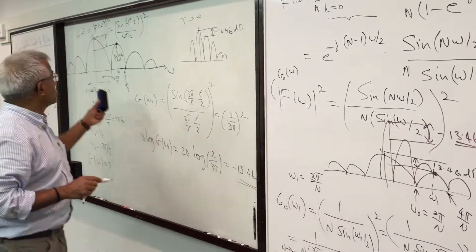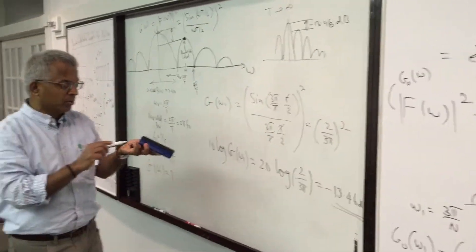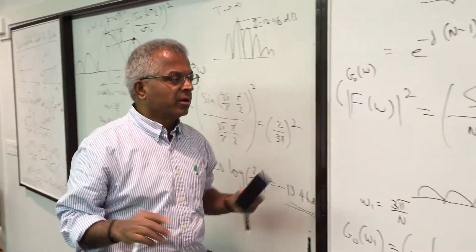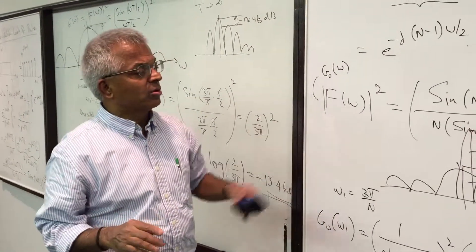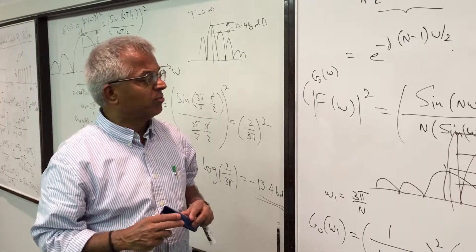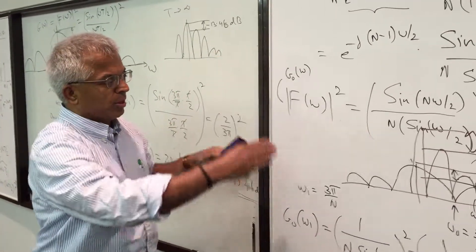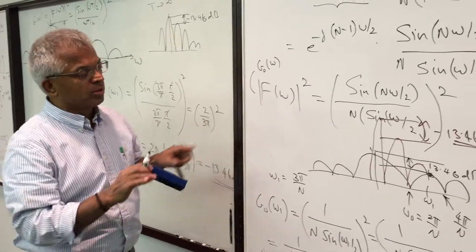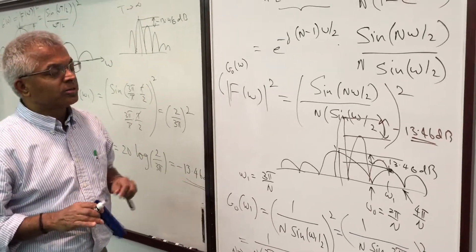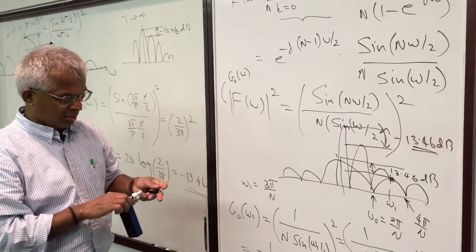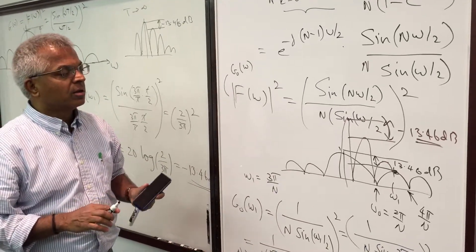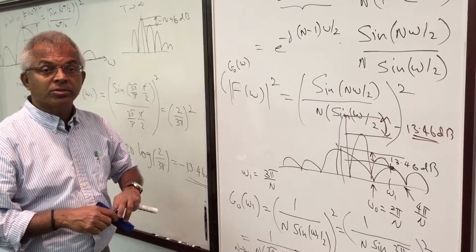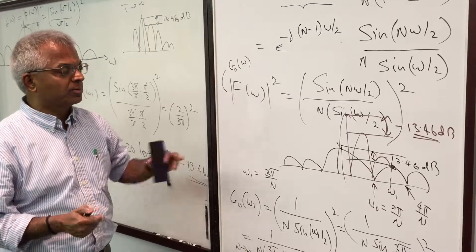The natural question is: how do you reduce the side lobes? The answer is to modulate by some other window. In radar, for example, Taylor windows or Dolph-Chebyshev windows are used. These windows have fast-decaying side lobes, so their convolution in the frequency domain produces better peak side lobe levels.